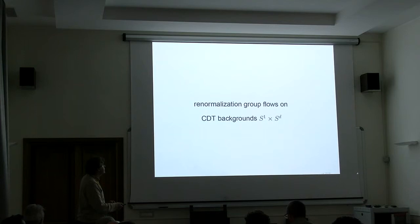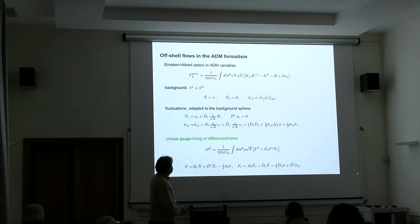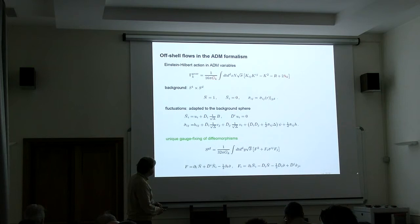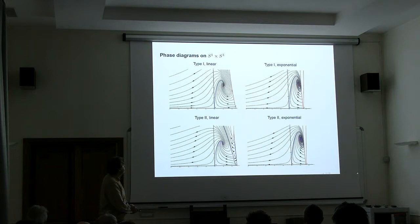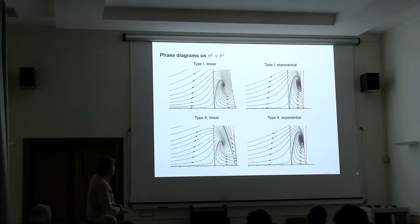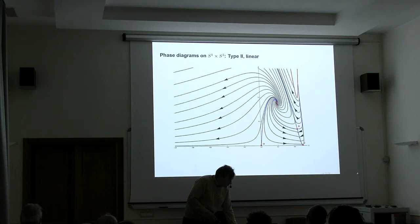Now the main part in terms of CDT investigations used the background S1 times S3. We decided to check what happens if we change this background in terms of flow equations. The setup is the same. We only need to change the reparametrization of our fluctuation fields. We adjusted to the background sphere in this case. Again, there is a unique gauge fixing which leads to well-defined propagators, and you can construct the same type of flow diagrams. Here we have different parametrizations of the fluctuations. Again, the thing looks strikingly similar to what we had before, with the exception of the diagram that we have down here.